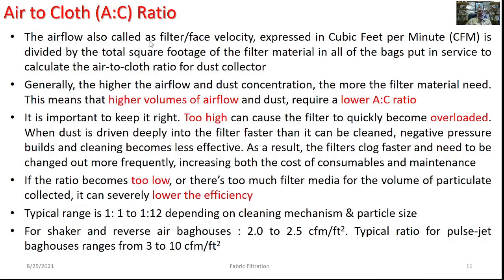It is necessary to maintain the air-to-cloth ratio at the right level. If the ratio is too high, it can cause the filter to quickly become overloaded. On the contrary, if the ratio is too low or there is too much filter area, it would hamper the efficiency of the baghouse considerably. Typically, the A:C ratio could be 1:1 to 1:12 depending on the cleaning mechanism and particle size to be removed. For shaker and reverse air baghouses, the A:C ratio is in the range of 2 to 2.5 cfm per square foot, whereas for pulse jet baghouses it could be 3 to 10.